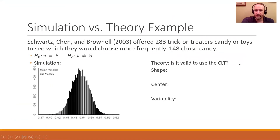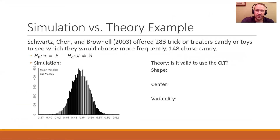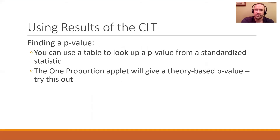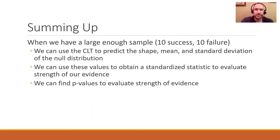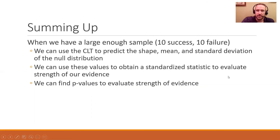Either approach is really fine in this case, and a lot of people choose theory-based because that's what they've been trained to use. When we have large enough samples — 10 successes, 10 failures — we can use the central limit theorem to predict the shape, the mean, and the standard deviation of the null distribution, and then use that to obtain a standardized statistic and evaluate our strength of evidence. We can also find p-values as well. That's how we can use a theory-based approach with a single proportion.